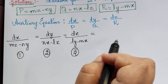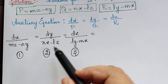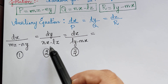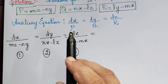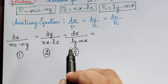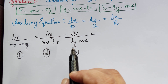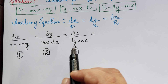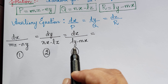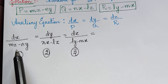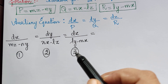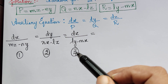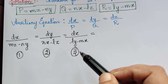Now, since in this question the alphabets l, m and n are already used as constants in the given problem, we are going to represent the multipliers by a, b and c in order to avoid confusion. In our previous problems we used l, m, n to represent multipliers, but here we will use a, b and c instead.